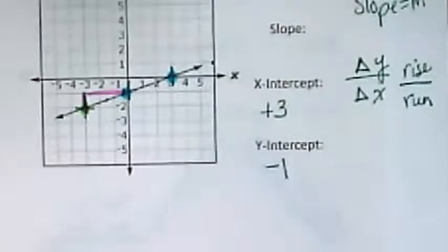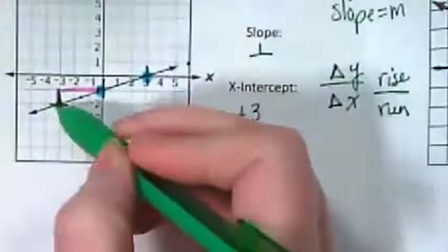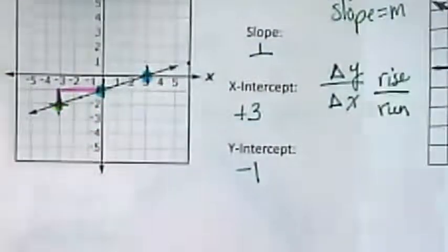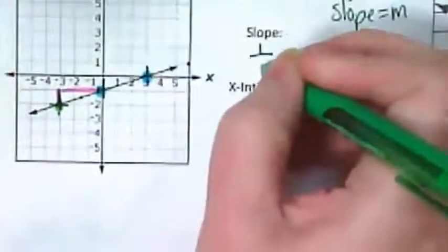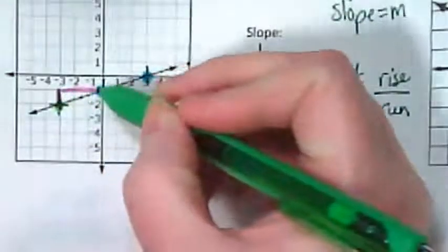How much should we rise up? How much should we run across? We rose up one. We ran across one, two, three. One, two, three.